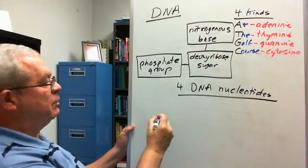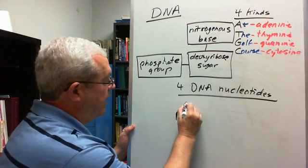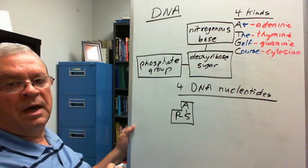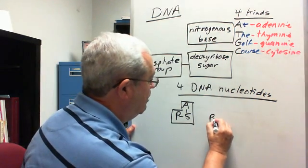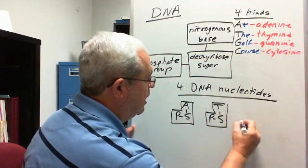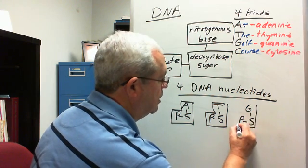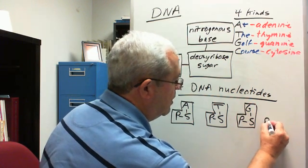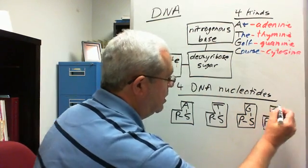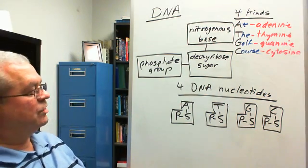We can symbolize those four nucleotides. I like to symbolize them like this: phosphate-sugar-A, phosphate-sugar-T, phosphate-sugar-G, phosphate-sugar-C, drawing a little box around each for reasons that will become clear shortly.